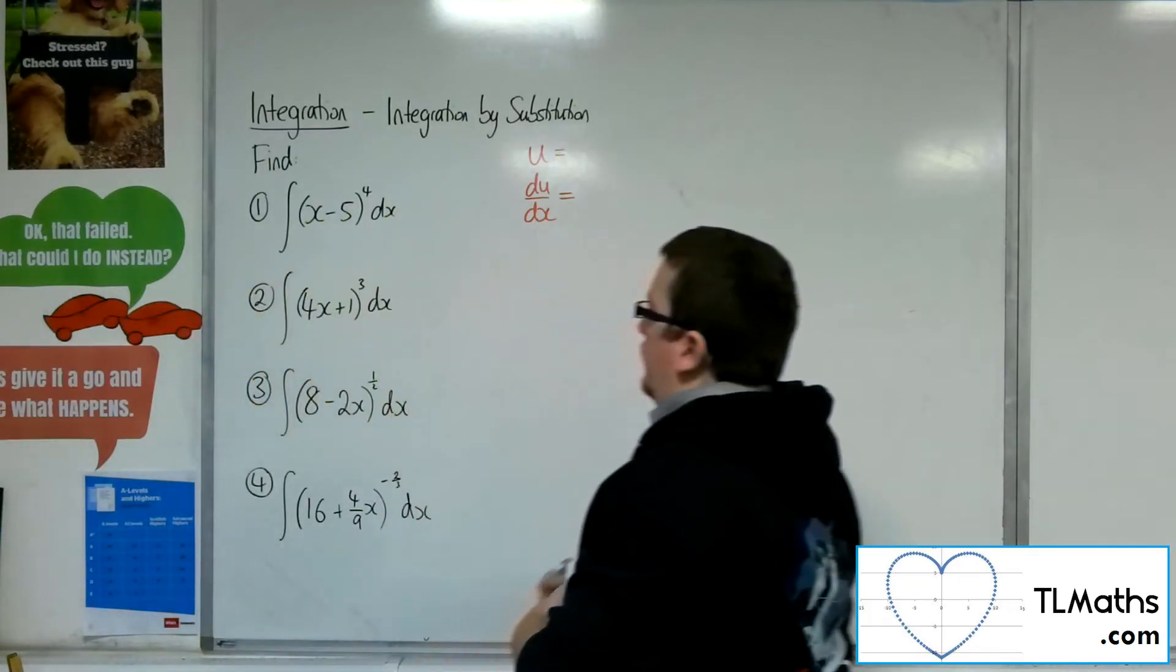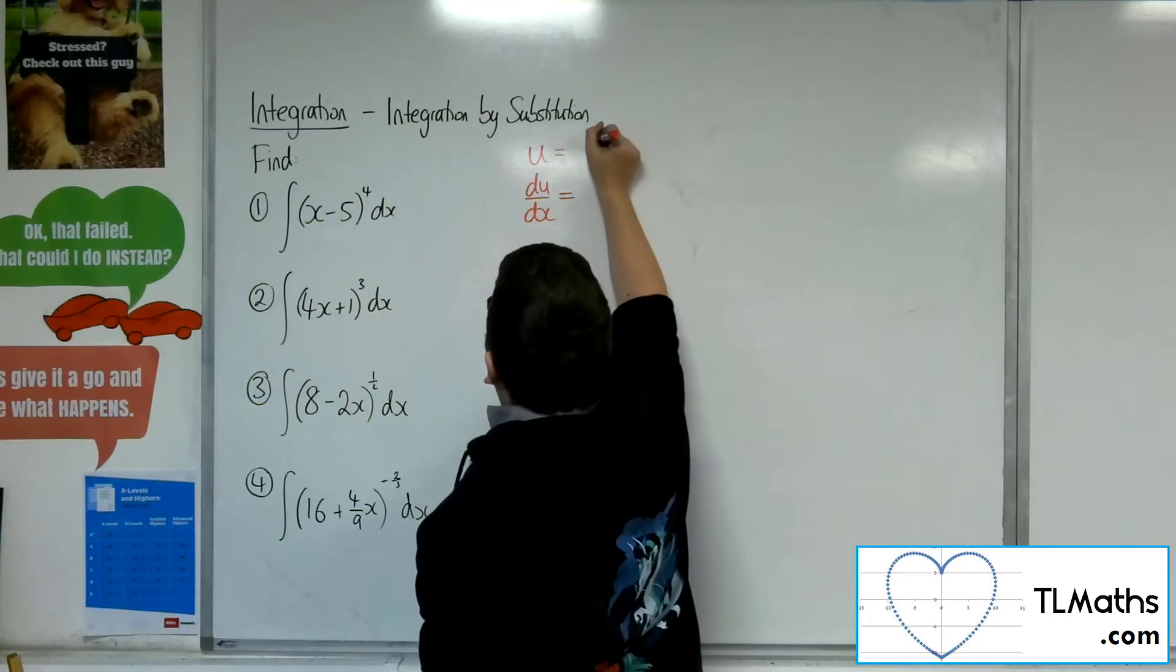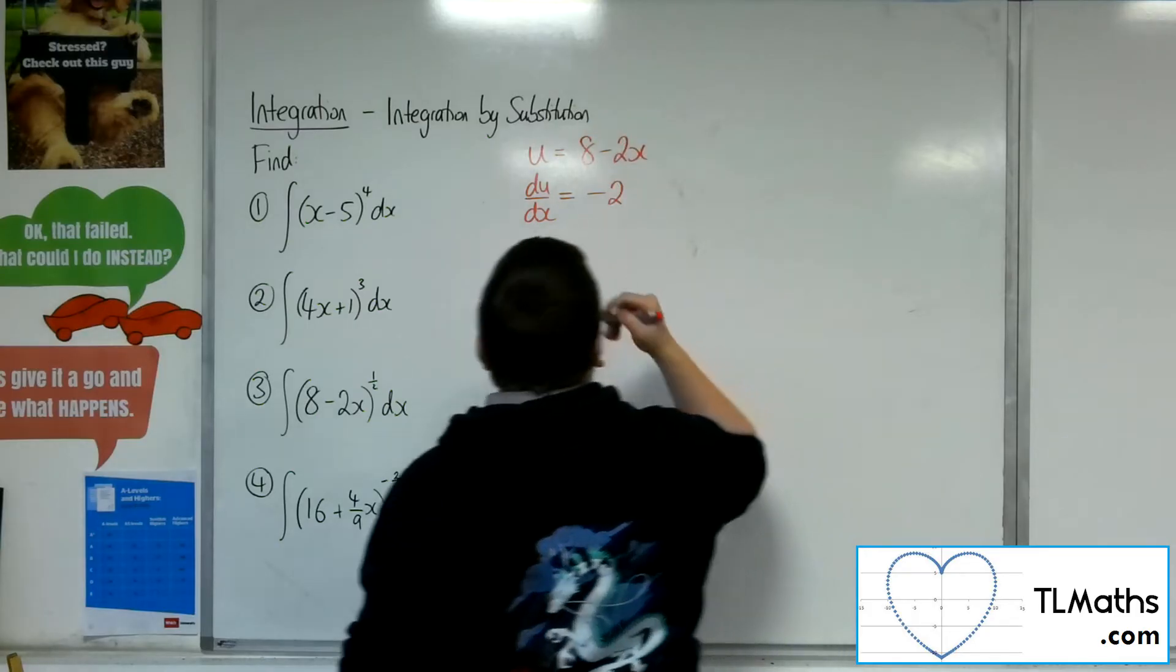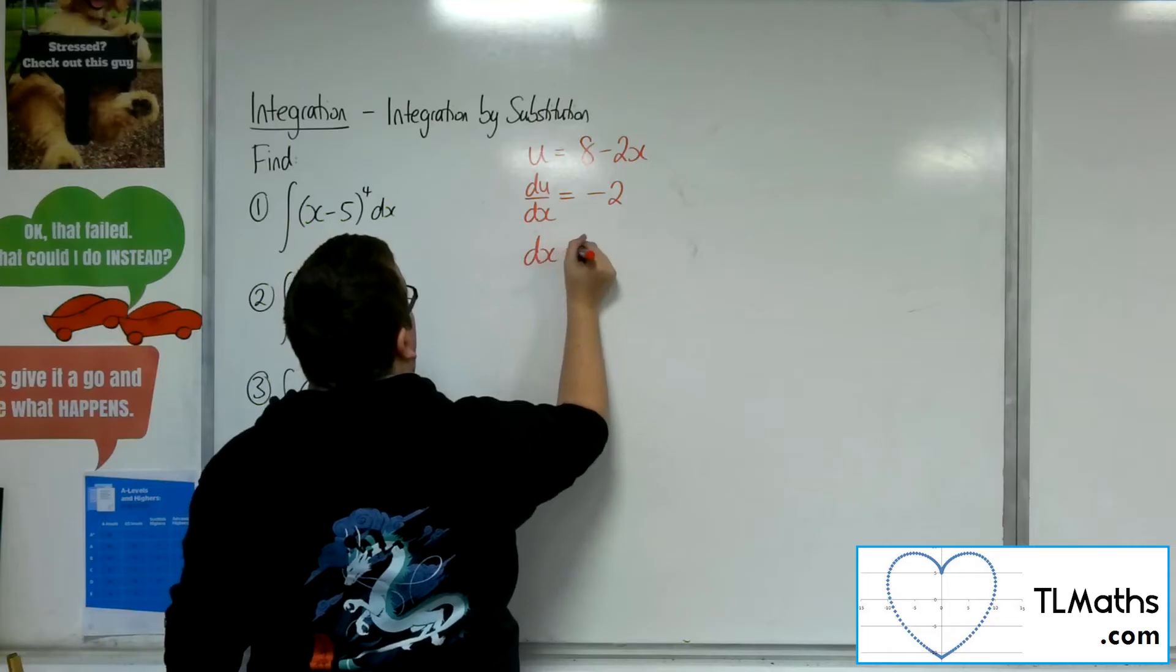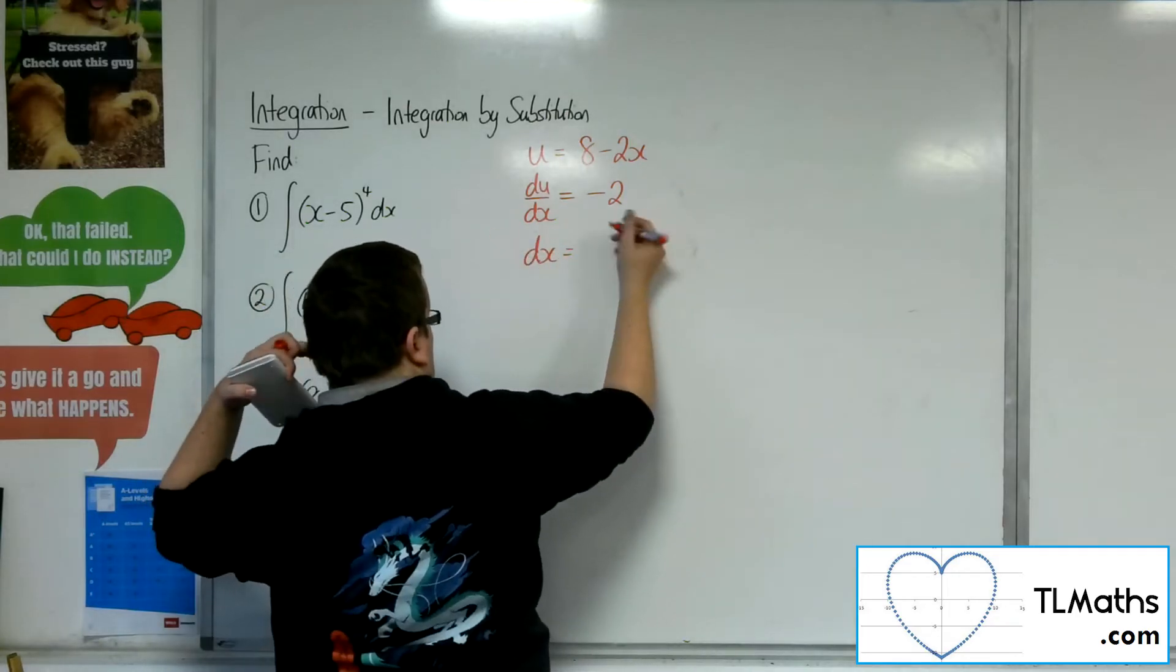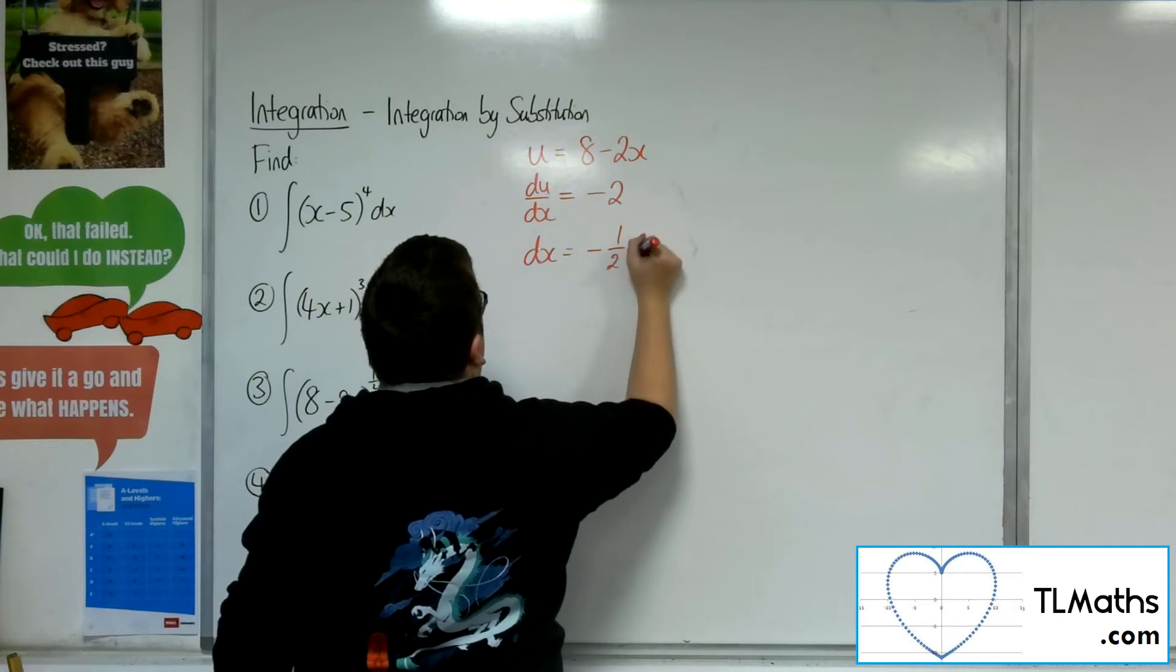Right, number 3. u is equal to 8 minus 2x. So differentiate that to get minus 2. That can be rearranged to get dx equals, well, dividing by the minus 2, multiplying by dx. So minus 1 half du.